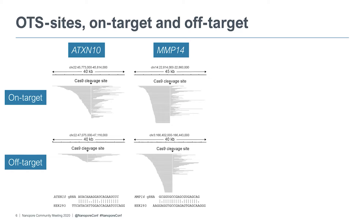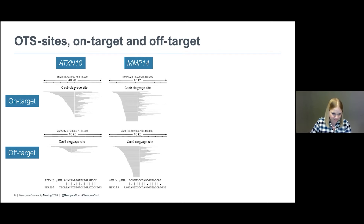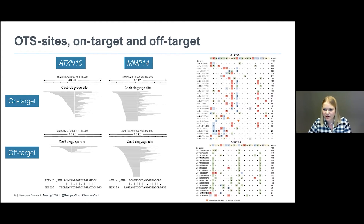To evaluate our OTS method, we designed a number of different guide RNAs. This is an example of two of them targeting the genes ATXN10 and MNP14. On the top we see the on-target sites showing the typical read pattern with the Cas9 cleavage sites. On the bottom we have examples of off-targets for these two guide RNAs, again showing the typical read pattern at the Cas9 cleavage site. When you compare the guide RNA to the genomic sequence at these off-target sites, they are very similar — in both cases differing by three base pairs. The table summarizes all off-targets found, with the on-target showing a perfect match and rows below showing off-target sites with their mismatches to the guide RNA.